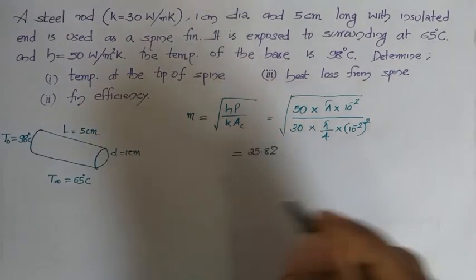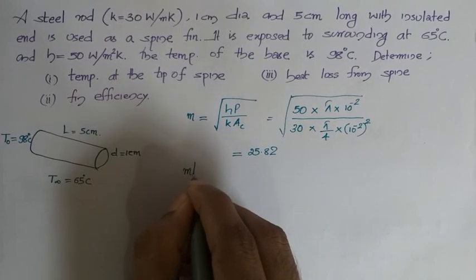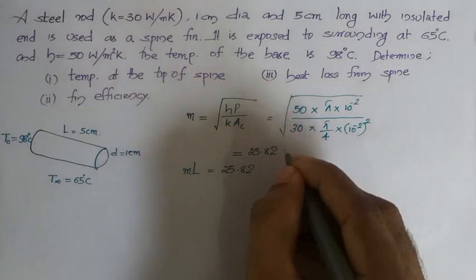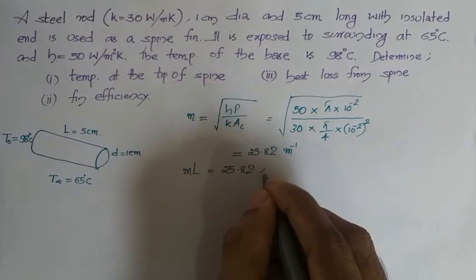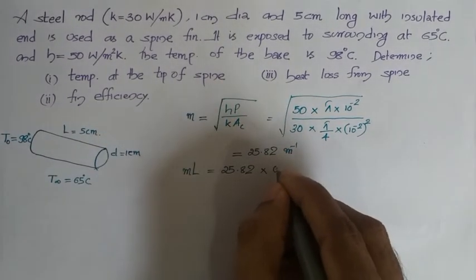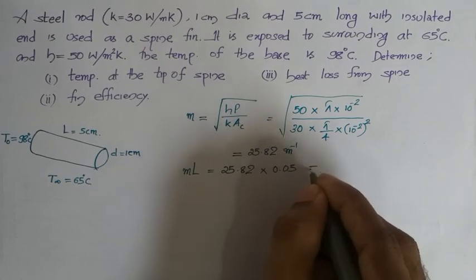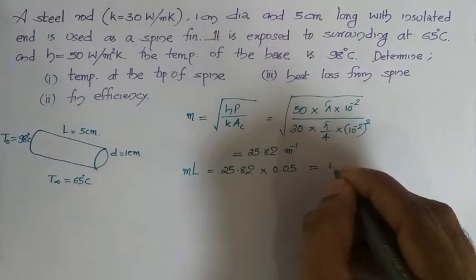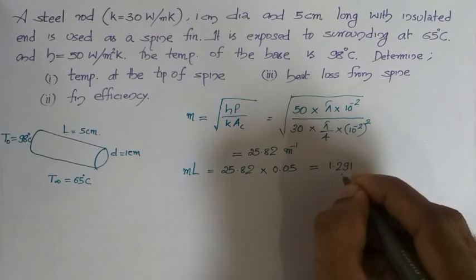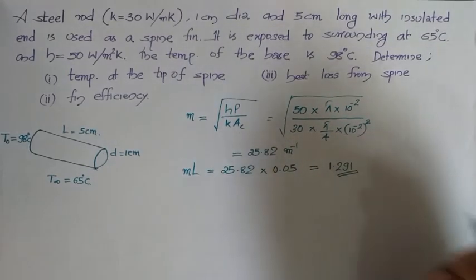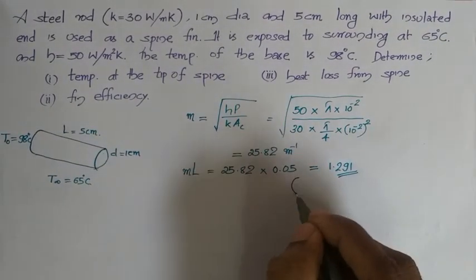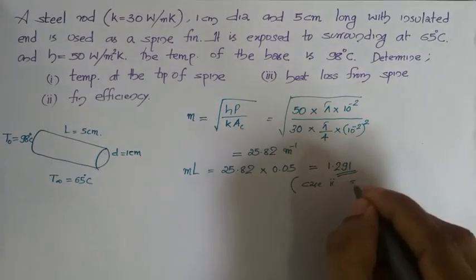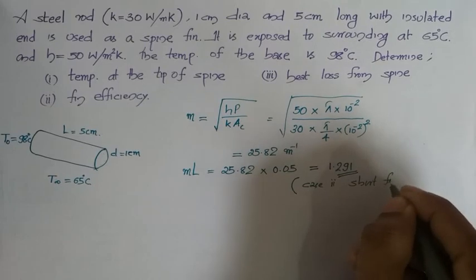From this we find the product M into L. M is 25.82 (units: meter raise to minus 1) and length is 5 centimeter or 0.05 meter, giving M·L = 1.291, which is unitless. Since M·L is less than 2.67, this is Case 2: short fins with end insulated.